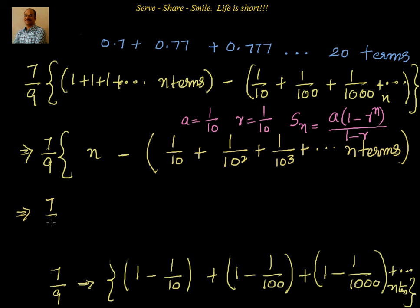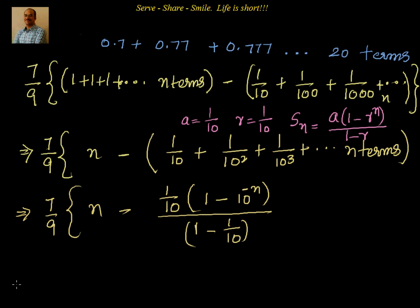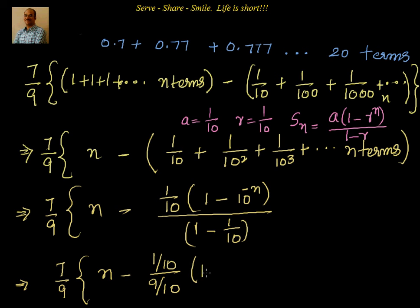Applying the formula, the expression becomes 7/9 times [n minus (1/10) times (1 − 10^(−n)) divided by (1 − 1/10)]. We write r^n as (1/10)^n = 10^(−n), and the denominator (1 − r) = 1 − 1/10 = 9/10.